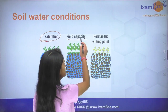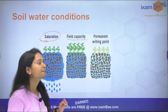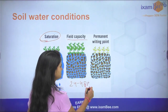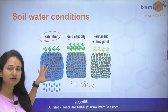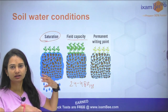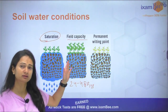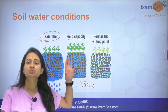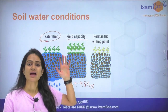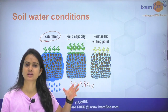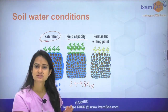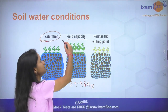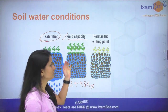The second condition is field capacity. What is field capacity? When around 24 to 48 hours have passed after rainfall, flooding, or irrigation — after the saturated condition — and the water supply is closed, what happens? The gravitational water, which is the extra water present in the macropores, drains down due to the force of gravity. Only the micropores retain water. At that condition, it is called field capacity.